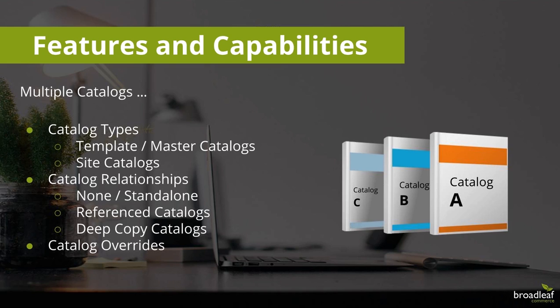As you define your sites, a site would have its own catalog as well, and you can associate template or master catalogs with a given site. Within the relationships, you can set up a site catalog that is only your site catalog — a standalone catalog with no overarching master. It's a simple model: you set up your single catalog, establish your categories and products, and that's it.